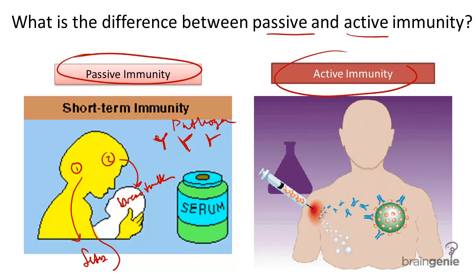Active immunity, on the other hand, is when somebody gets exposed to antigens, whether it be by an immunization or just entry into the body through openings in the skin.